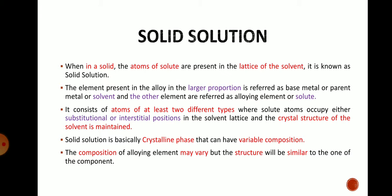In a solid solution, it consists of atoms of at least two different types, where the solute atoms occupy either the substitutional or interstitial positions in the solvent lattice, and the crystal structure of the solvent is maintained. Those atoms are present either in substitutional or interstitial positions — these two are the types of solid solution.